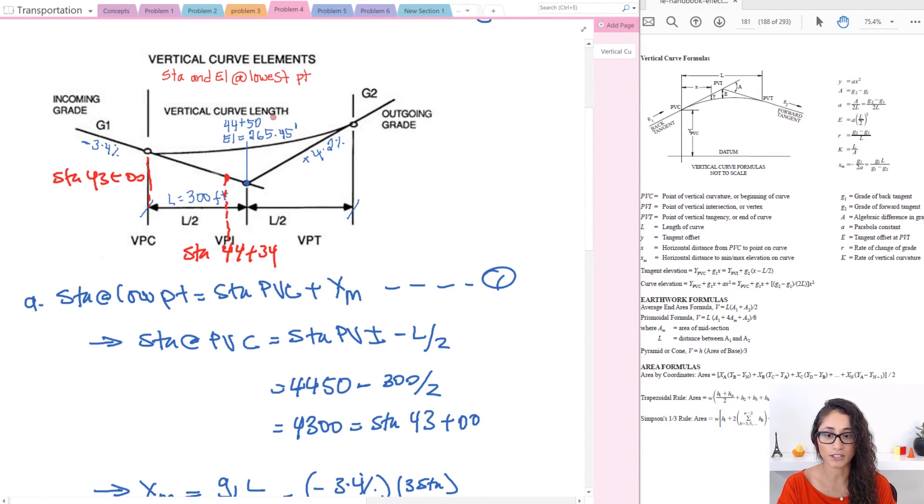Now the elevation at this point is 268.3. Note that it is higher than the elevation at PVI. However the elevation at PVC is higher than the elevation at the lowest point. The elevation at PVC was 270.55 and the elevation at the lowest point was 268.3. So it's good to just try to make sense of these numbers so that way you'll have a better understanding of the problems.